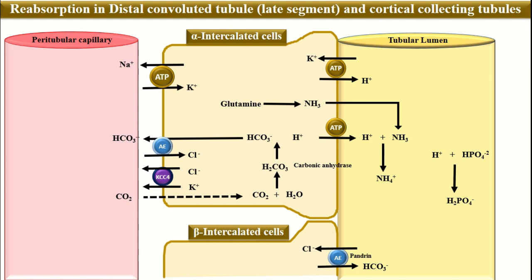On the basal side of the beta intercalated cell, we have another important transporter which is a hydrogen ATPase pump that leads to reabsorption of hydrogen from the beta intercalated cells.